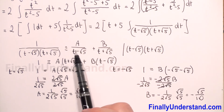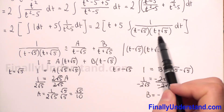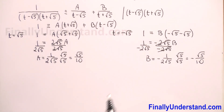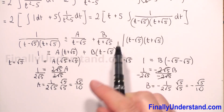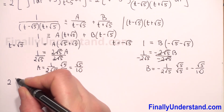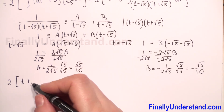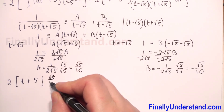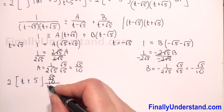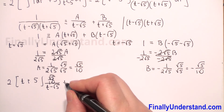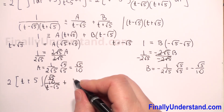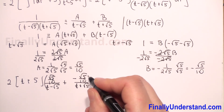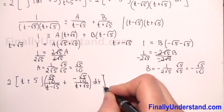Now we go back to our partial fraction decomposition. We substitute A and B and rewrite our integrand as a sum of two partial fractions. So we have 2 times t, plus 5 times the integral of: A equals square root of 5 over 10 over (t minus square root of 5), plus B equals negative square root of 5 over 10 over (t plus square root of 5), with respect to t.